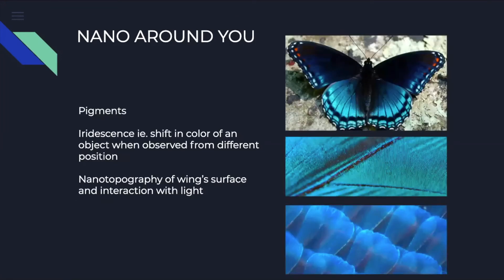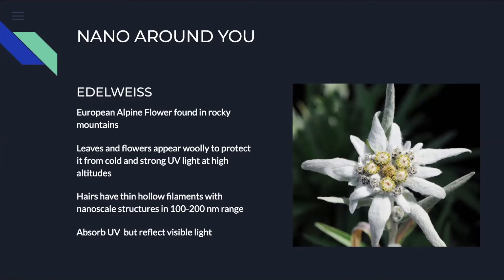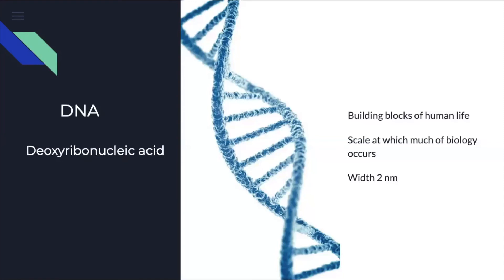Butterfly, getting its beauty from the nano-topography of its wings. Edelweiss is an alpine flower with woolly leaves and flowers for protection from UV light — its hairs have thin holofilaments with nanoscale structures in the 100 to 200 nanometer range. Dimensions of DNA are inherently on the nanoscale, with the diameter of DNA being 2 nanometers and helical pitch about 3.5 nanometers.